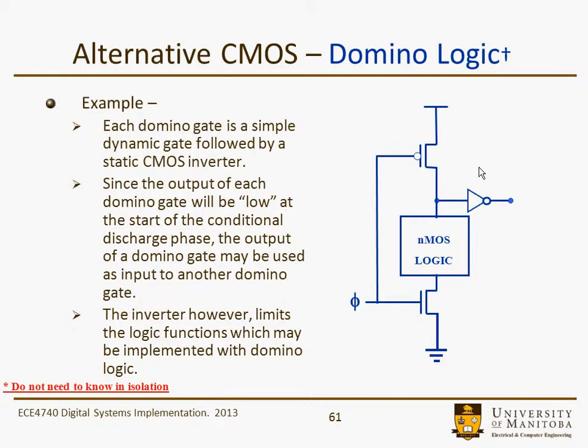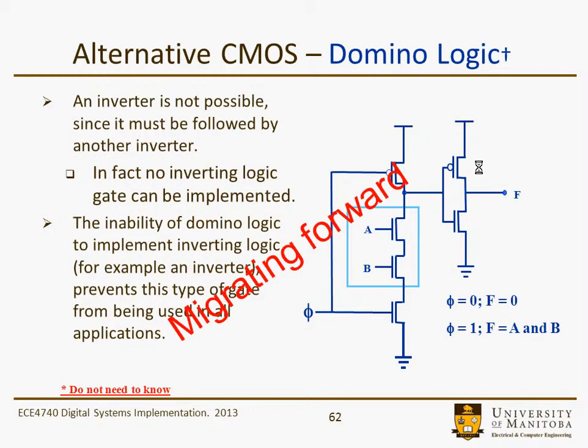Domino logic was useful, but not all logic can be implemented with it. For example, if you needed A and A-bar, that would be difficult to generate. Migrating forward a little bit, this is just an example of how you'd implement an AND-type gate in that kind of structure.